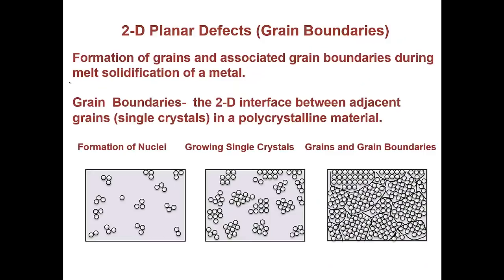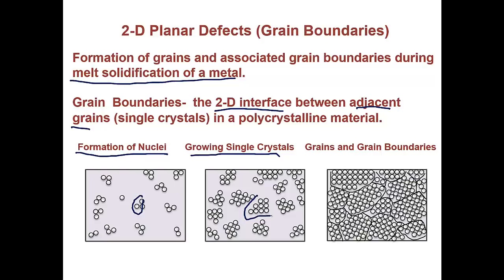Below we have a not-to-scale depiction of grains and grain boundaries showing how atoms do not line up. All atoms in one grain are oriented this way, while atoms in the adjacent grain move in a different direction. Because these atoms don't line up, they have an interface where they meet. These grains are three-dimensional crystals, making this interface a two-dimensional surface — that's what makes it a two-dimensional defect. On the next slide, we'll go over how these grains form. During melt solidification, as the temperature cools, nuclei form — small beginnings of crystals. Atoms join each crystal, growing single crystals, until eventually these grains run into each other, and the area where they meet is the grain boundary.